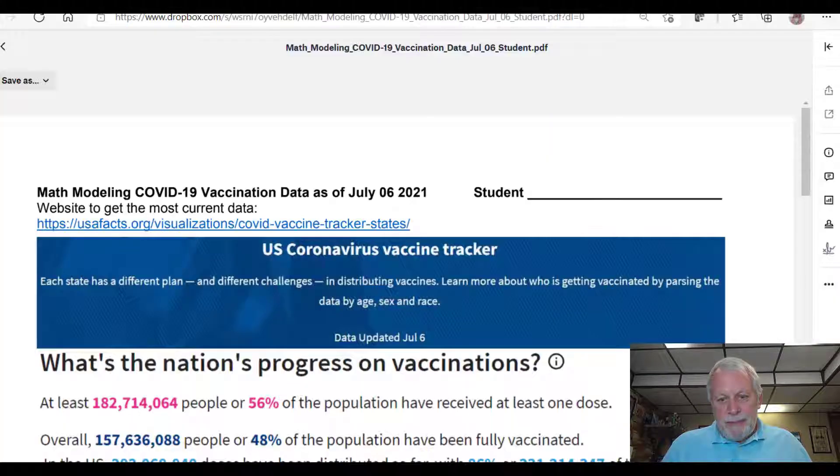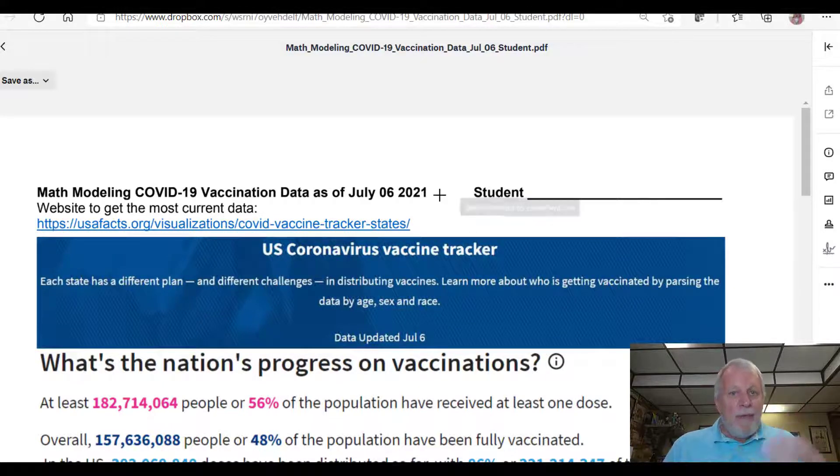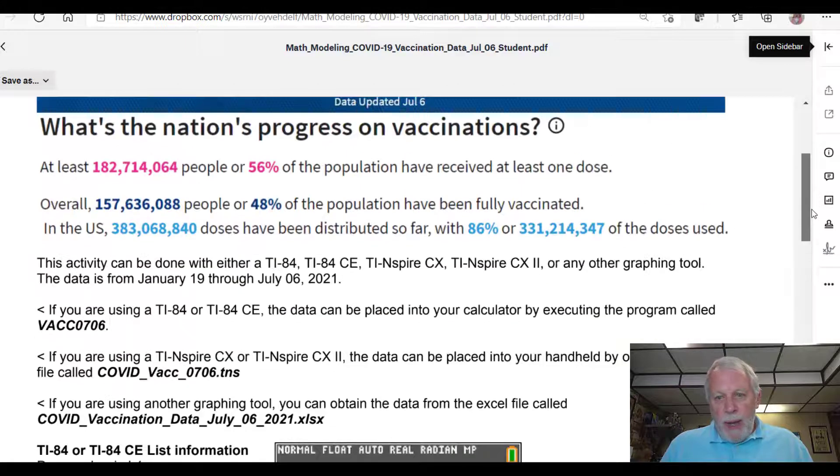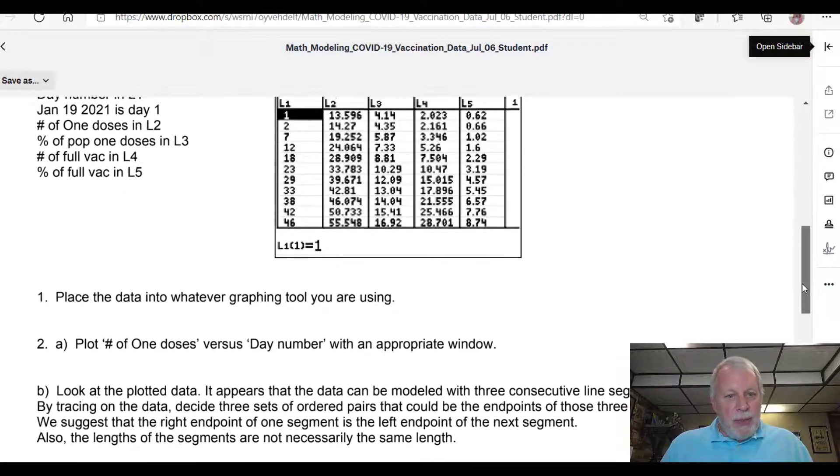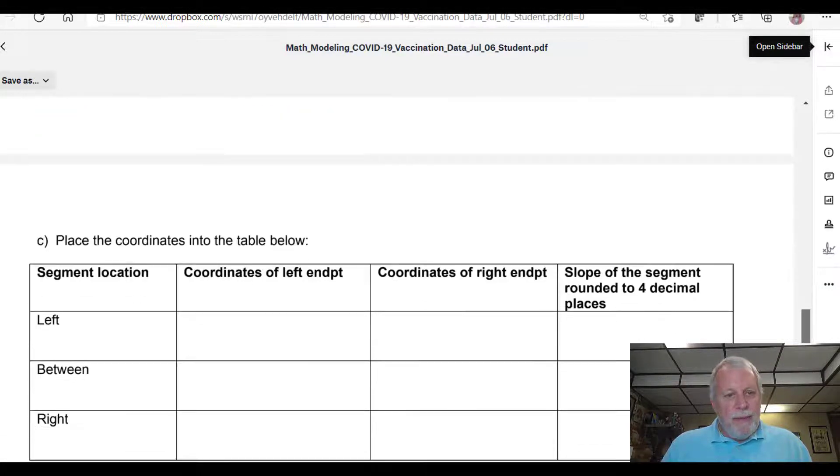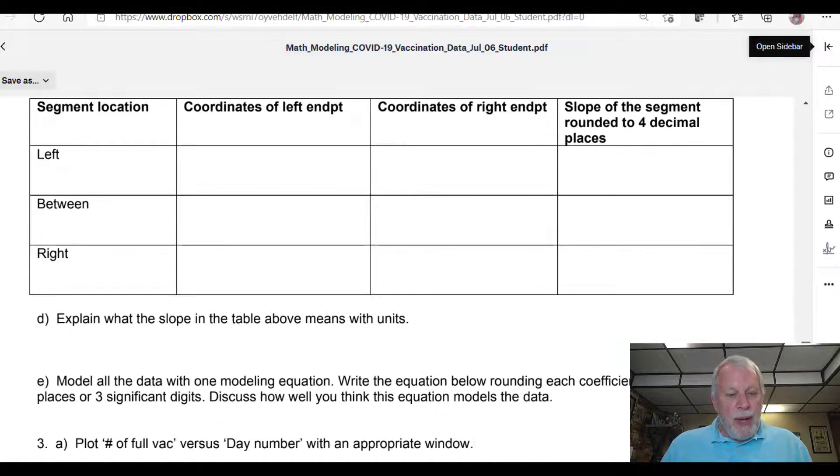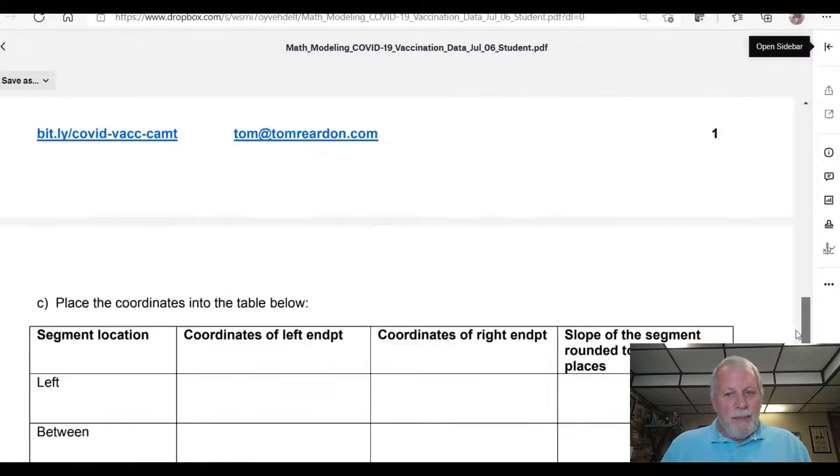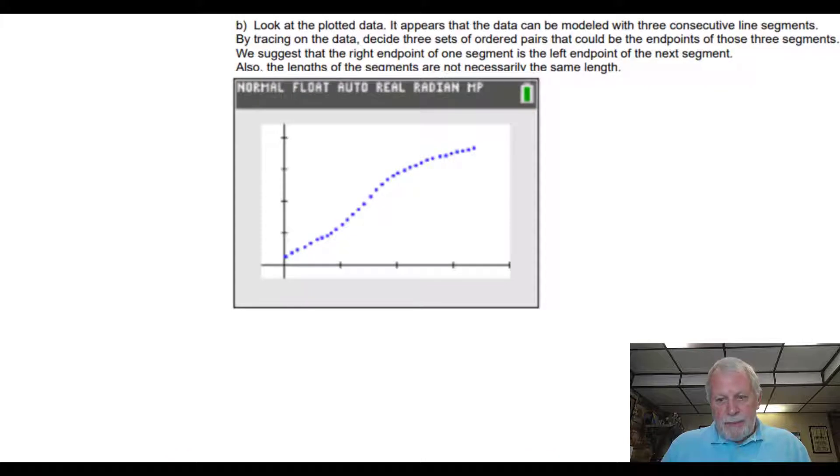Press pause as needed. Before I continue, let me just show you the PDF of the student PDF worksheet. It has the data and the links, and it shows you what the data should look like. Then step by step on how you should do this. These are the directions. This is what we're going to be doing throughout this. Here again, we have the plotted data. We're thinking that we could probably model this with three consecutive line segments, like one here, one here, and one here. Looks like they've got three different lines. We're suggesting the right endpoint of one segment is the left endpoint of the next one. They're not necessarily the same length as you can see. For sure, that's the case.